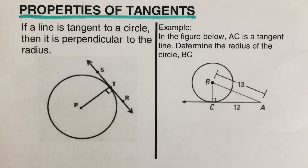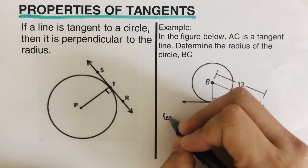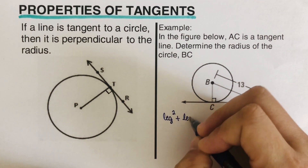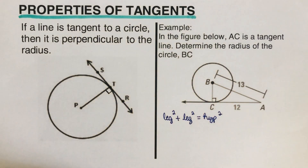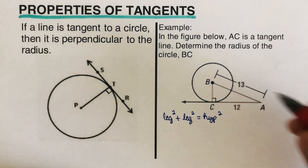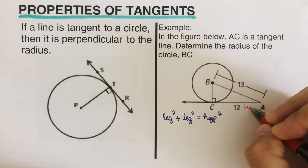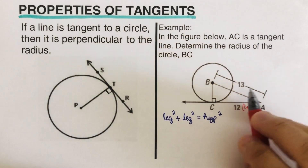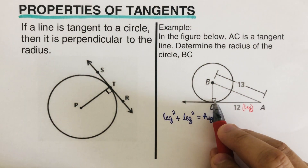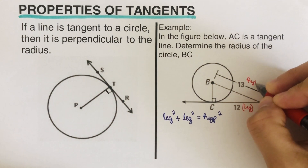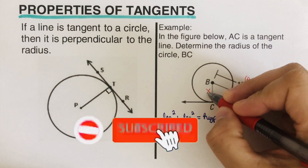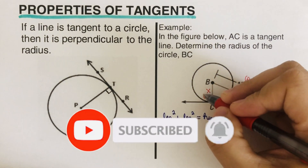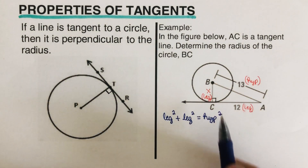Remember, the formula for the Pythagorean theorem is: leg squared plus leg squared equals hypotenuse squared. In this problem, 12 is one of the legs, and 13 is the hypotenuse because it's across from the 90-degree angle. BC we can name as x, and this is another leg of the triangle.